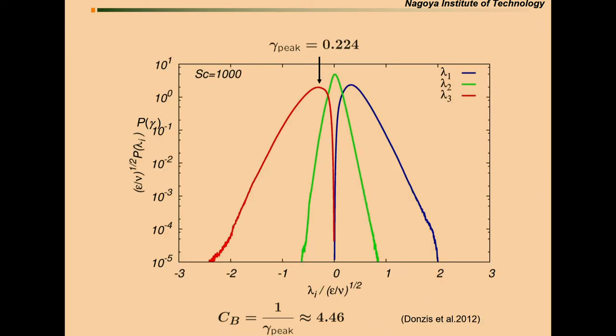Remember, the Batchelor theory introduced the spectrum is expressed in terms of gamma. It's the most negative eigenvalue of the rate of strain tensor. It is quite natural to compute the distribution of gamma, like this one. Our Reynolds number is 42. You can see the left tail is quite long.